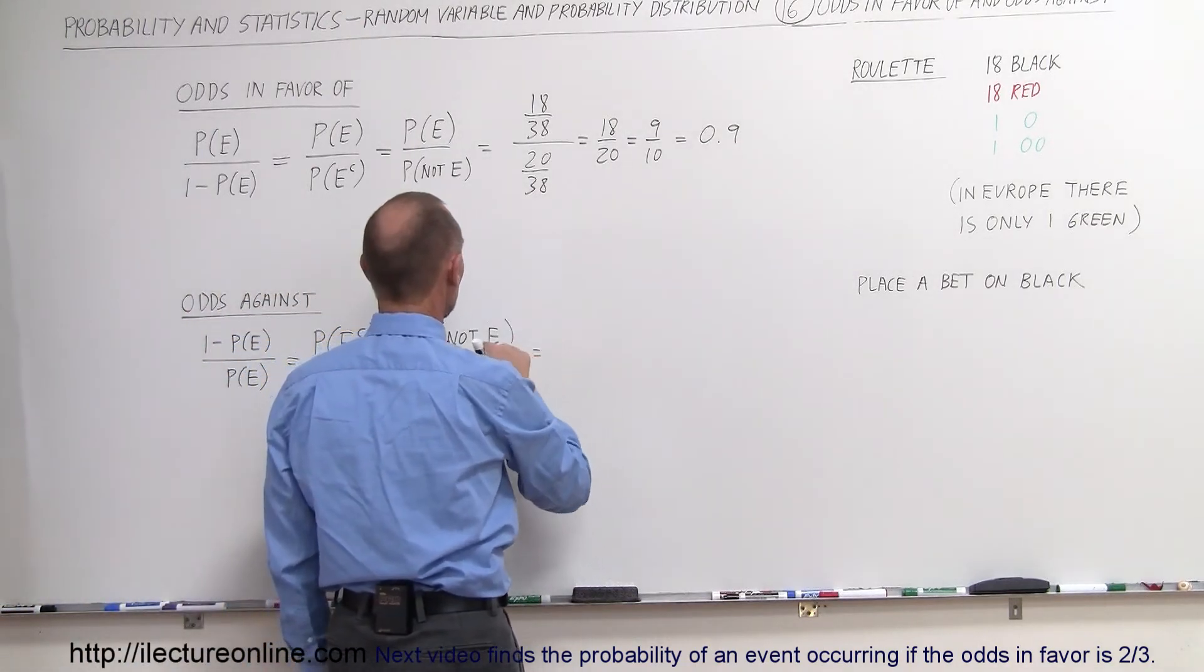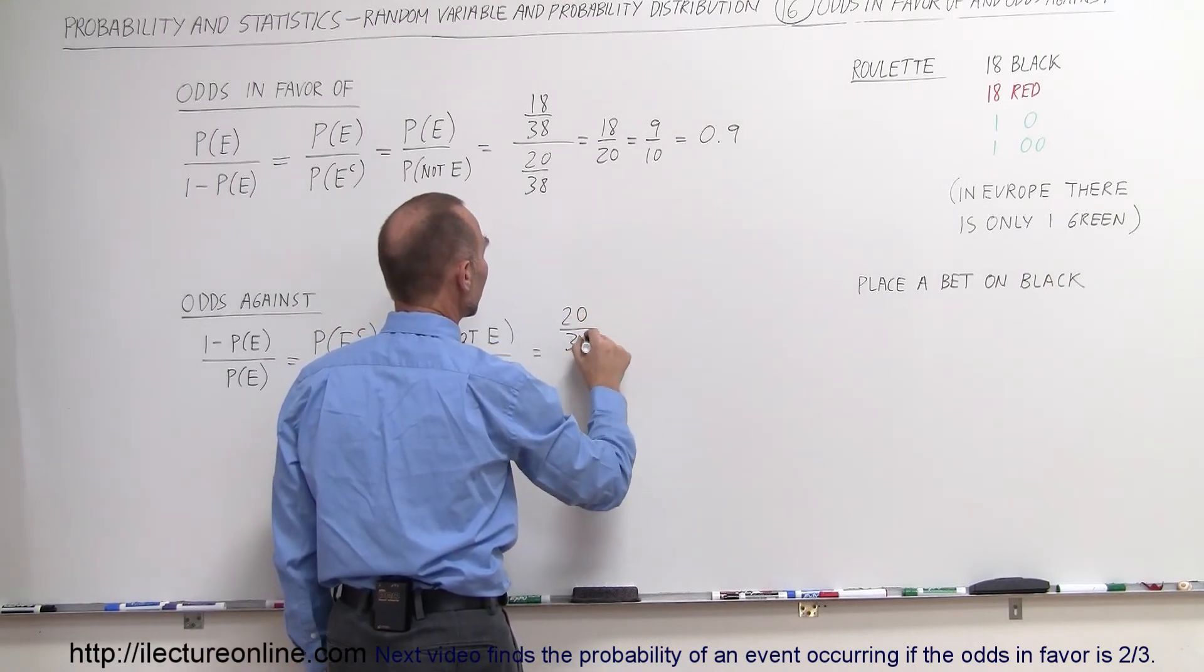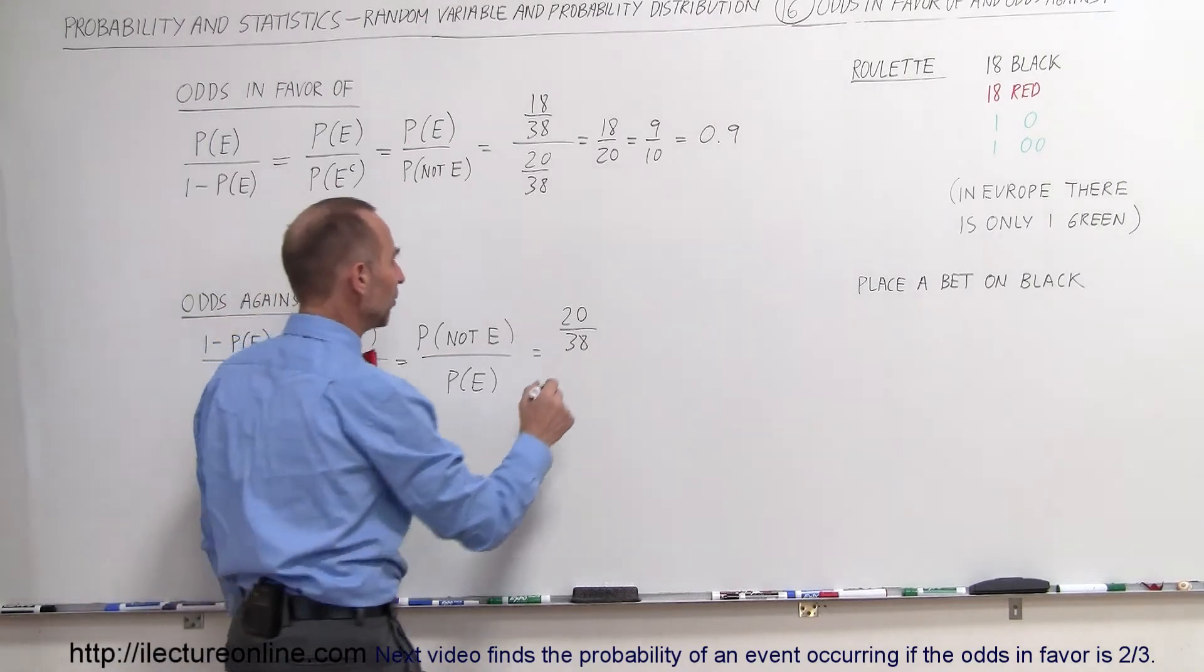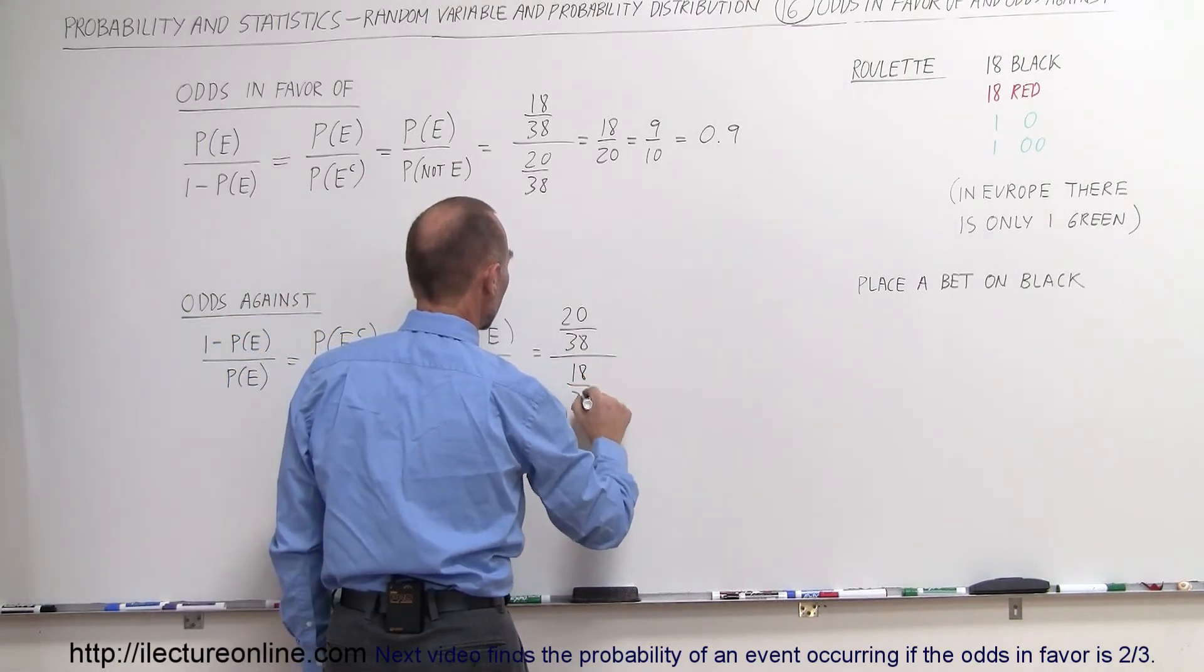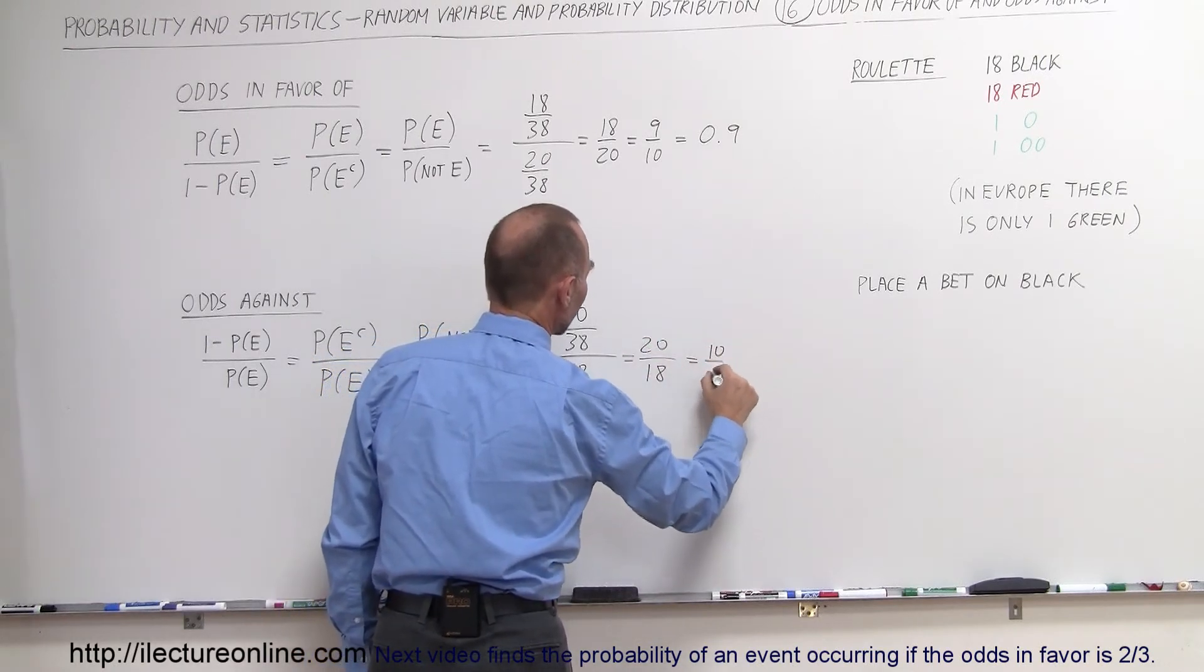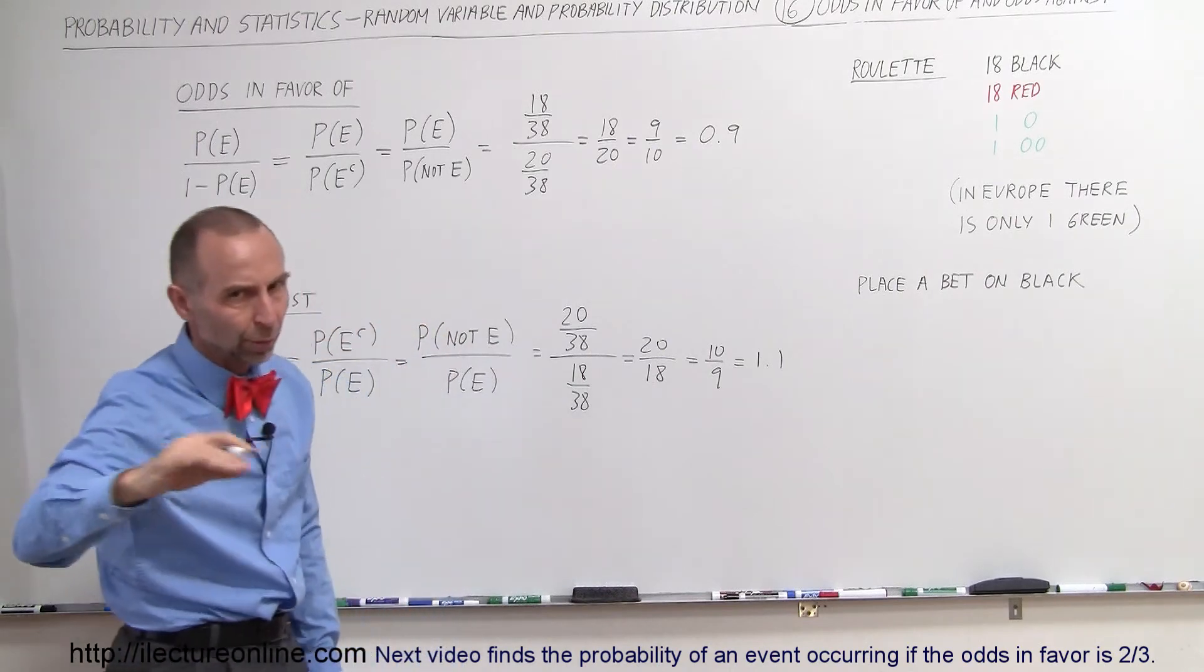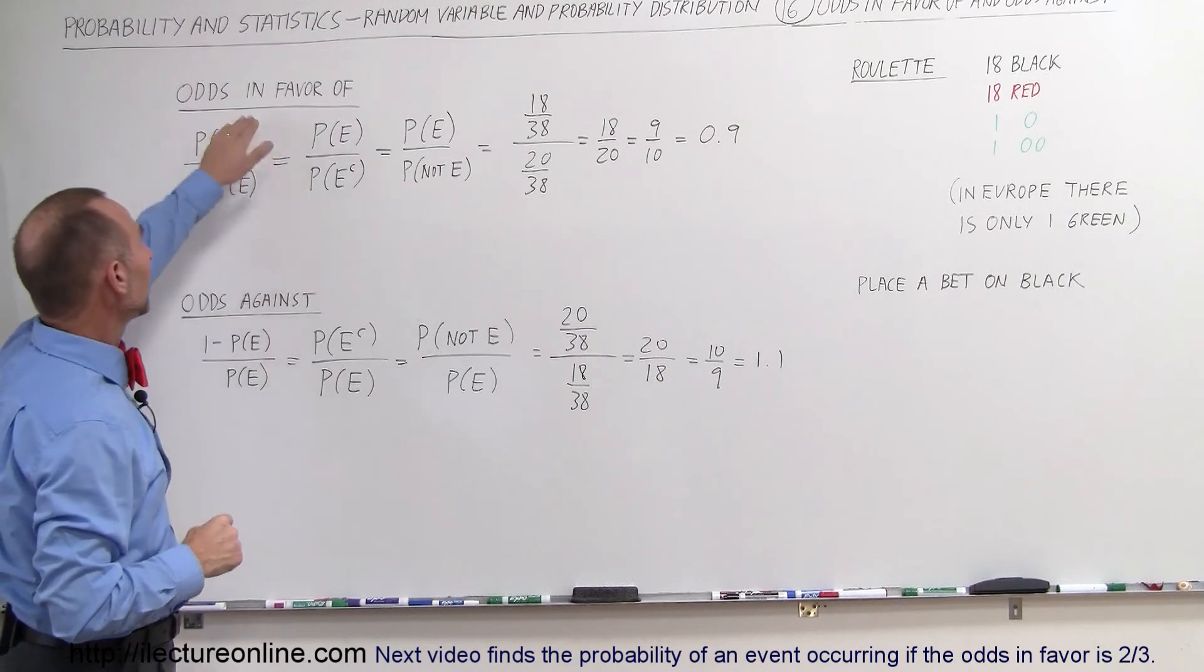Alright so here we have, that is equal to, not the event occurring - there's 20 out of 38 possibilities that the event will not occur, there's 18 reds and there's two greens, a total of 20, divided by 38 possibilities, divided by 18 over 38. So this would be 20 over 18, which is 10 over 9, which is how about 1.1 rounded off. It's actually 1.111, I think it goes on forever.